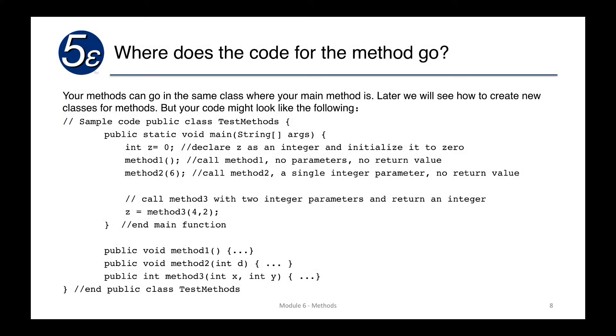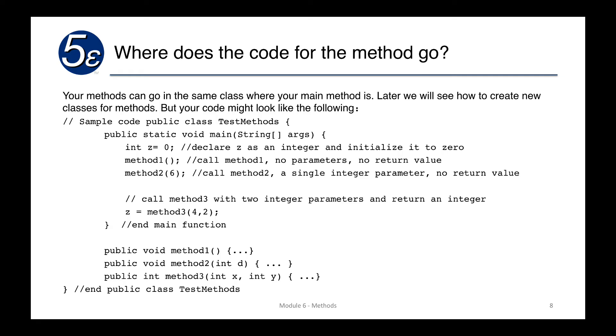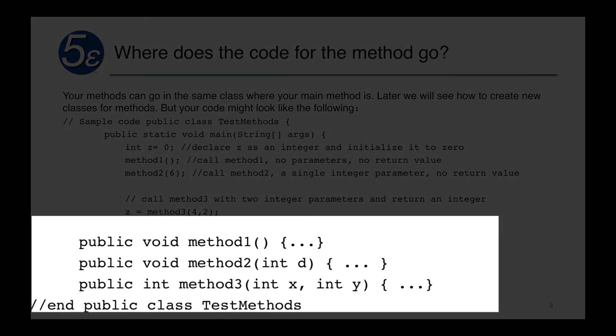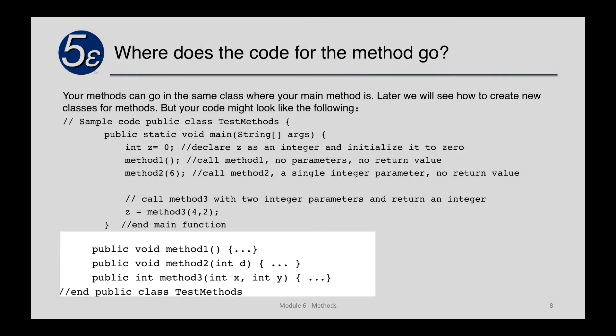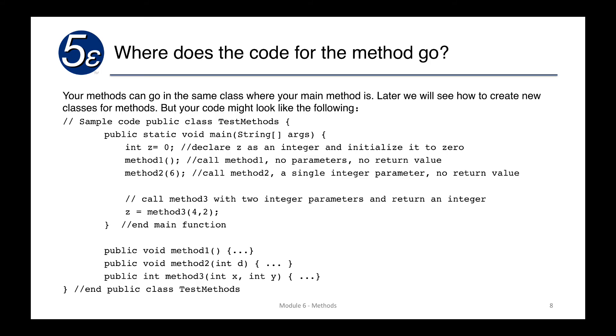So where does the code for the methods go? Well, we have our public class and here's the code that we had worked with before. Basically what we'll do is within that public class, we can just continue within the class, adding in a couple of methods. Public void method one, here's our no parameters and we will write some code. Public void method two with an integer d and then our code. Public int method three, integer x, integer y, and then our code.